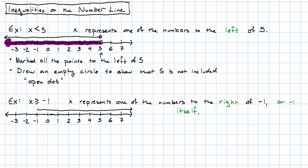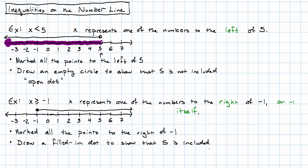For negative 1 itself, the way we're going to indicate that is by drawing a filled-in dot. So what we've done here is marked all the points to the right of negative 1 and drew a filled-in dot to show that negative 1 is included. That empty circle we sometimes call an open dot; the filled-in circle we sometimes call a closed dot.